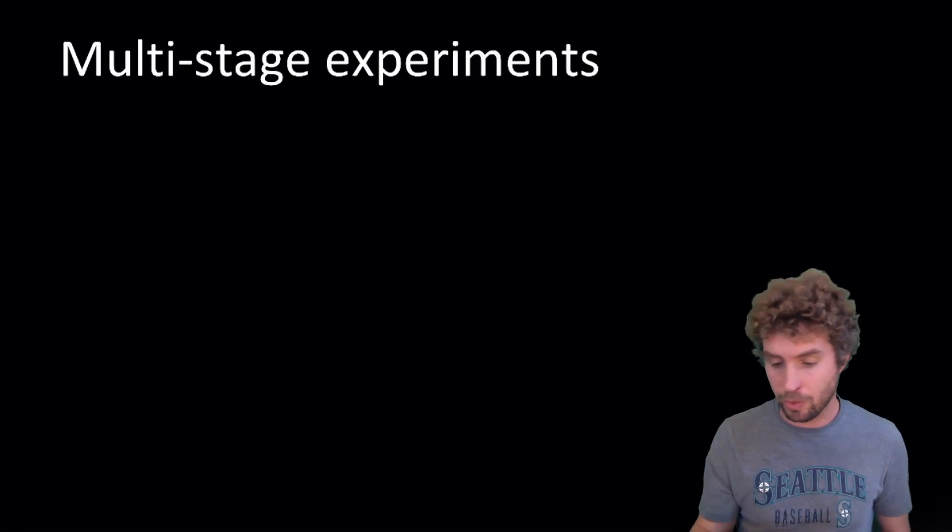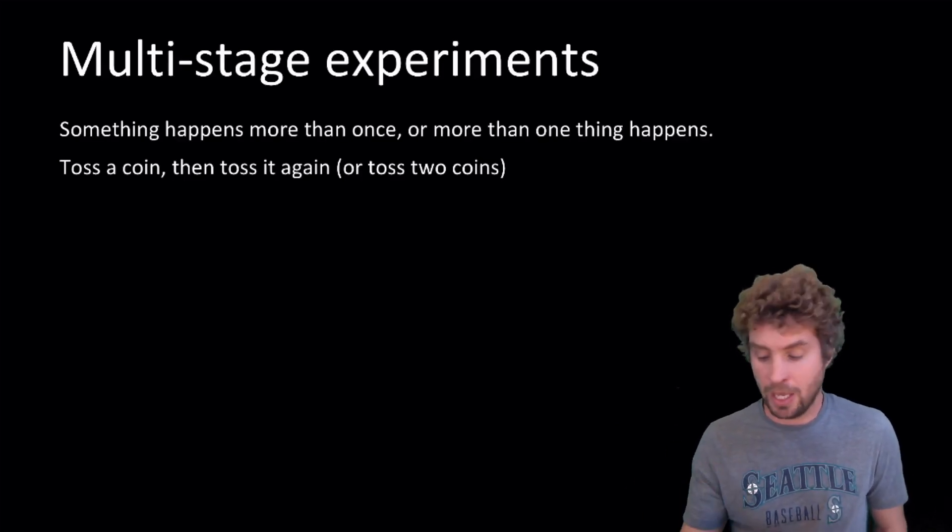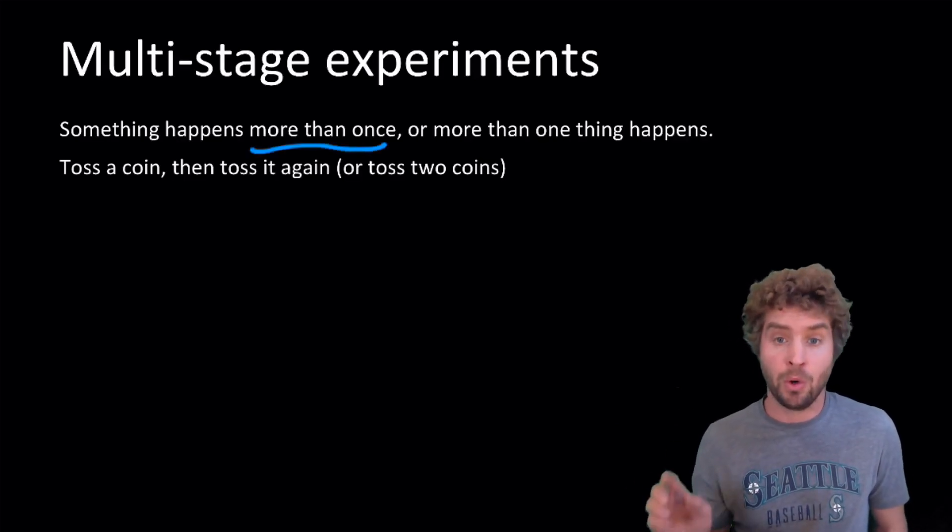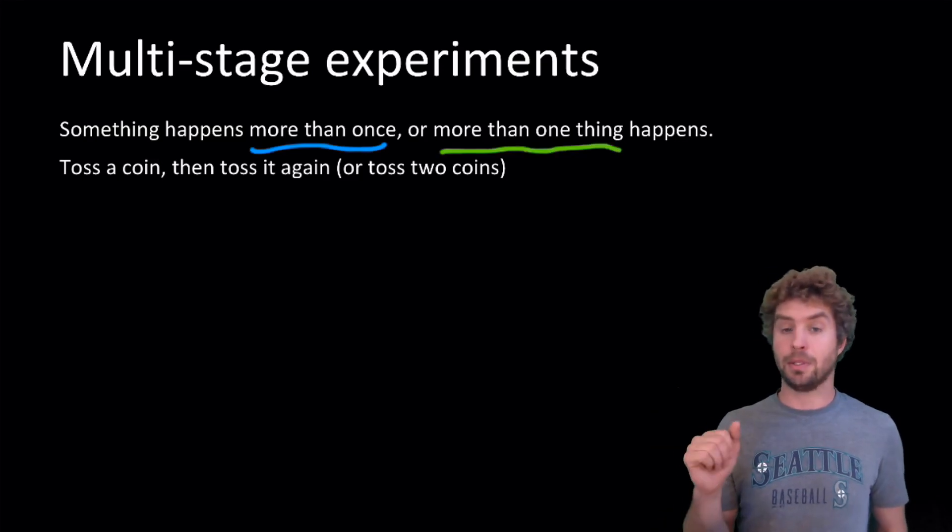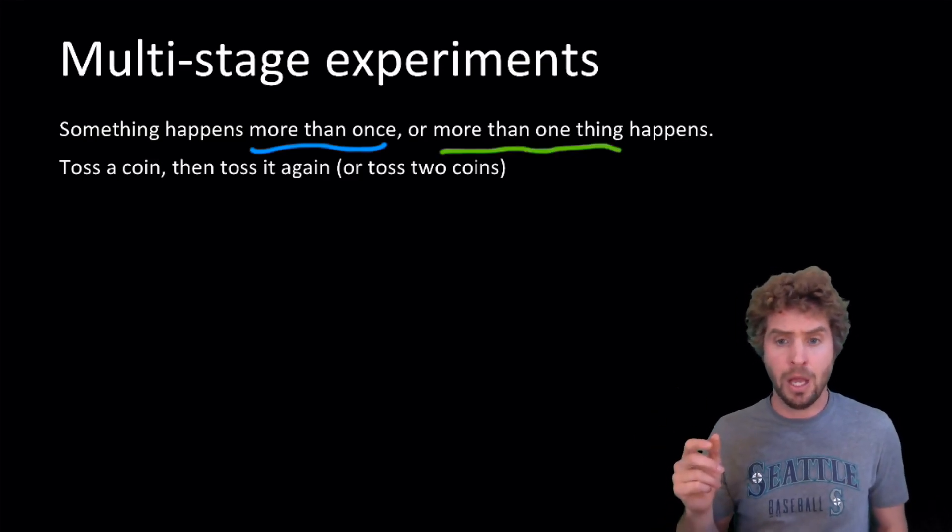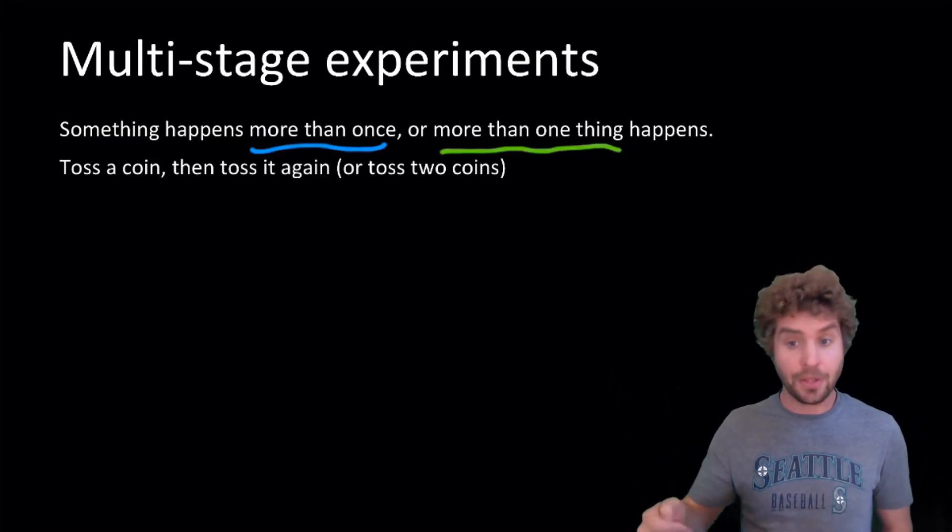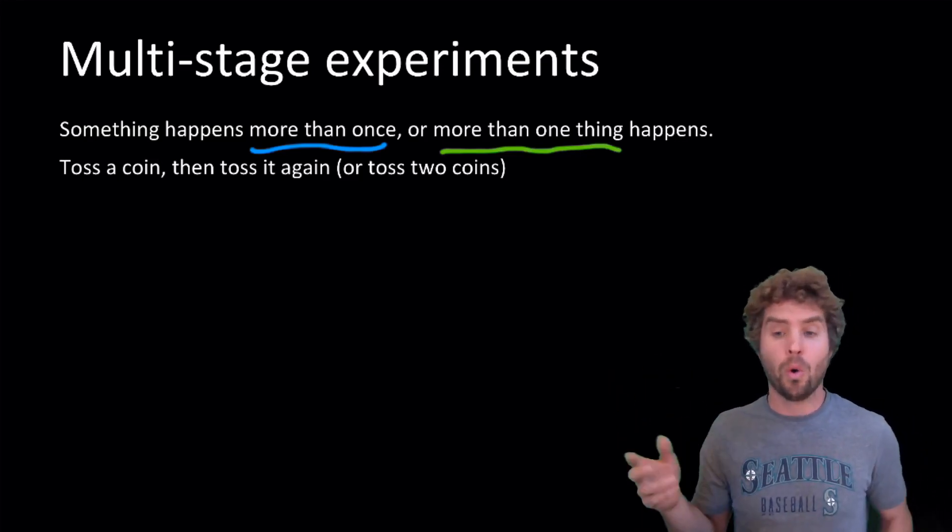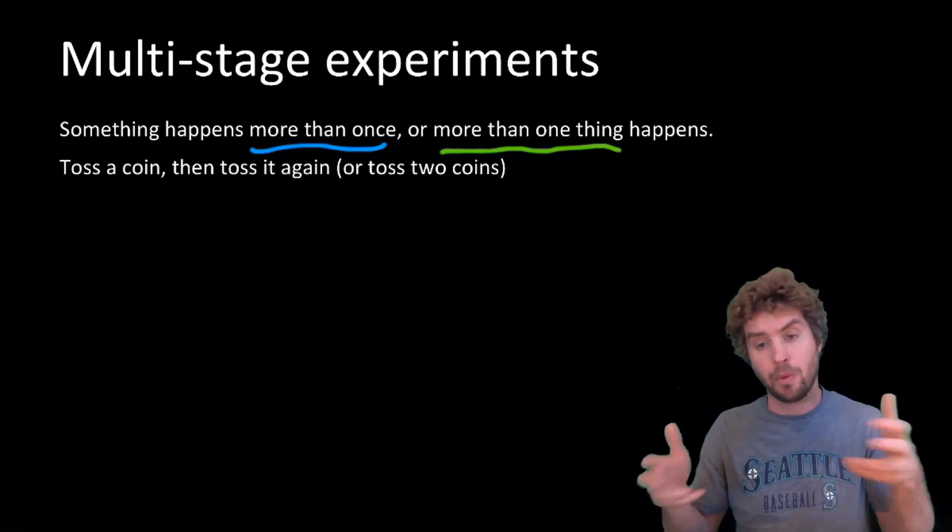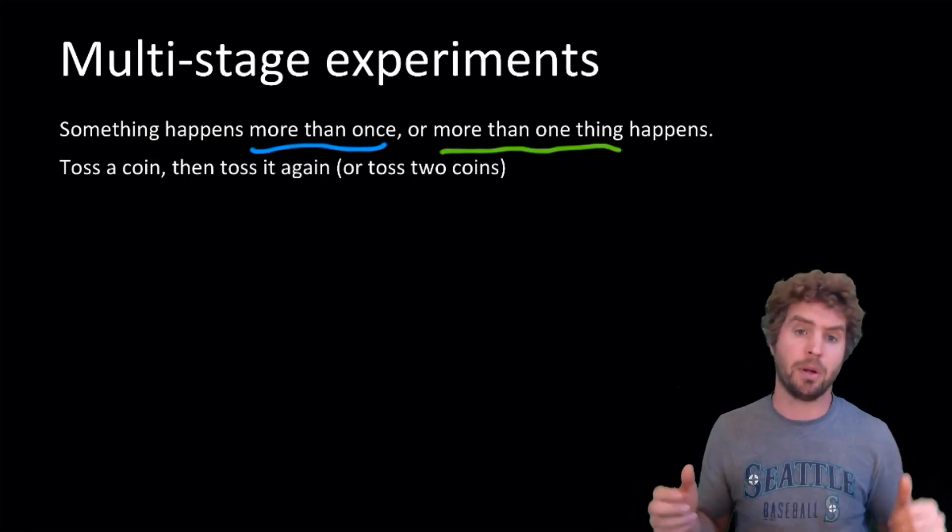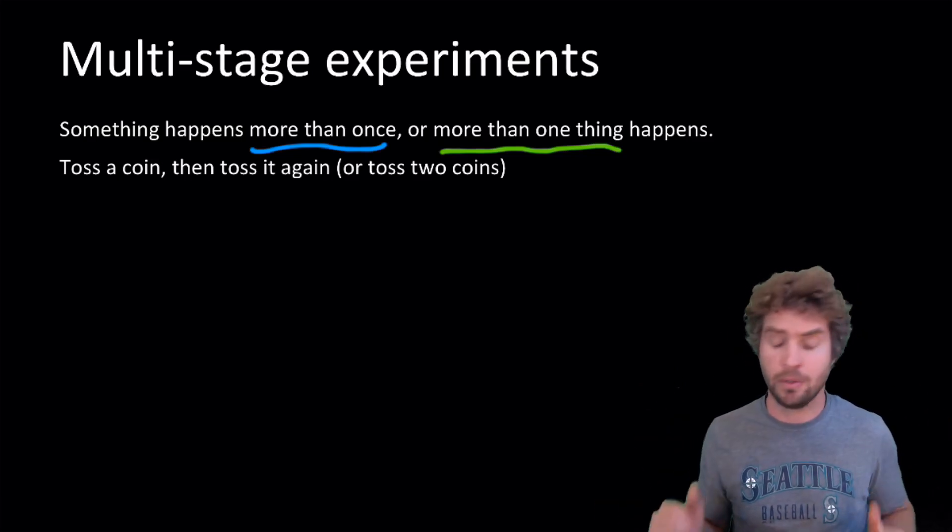Okay, multi-stage experiments, what are they? This is when something happens more than once, or when more than one thing happens. So, pretty straightforward. For example, you might toss a coin, and then you might toss it again. Or you could toss two coins at one time, and we want to sort this out mathematically, work out the probabilities of what could happen.